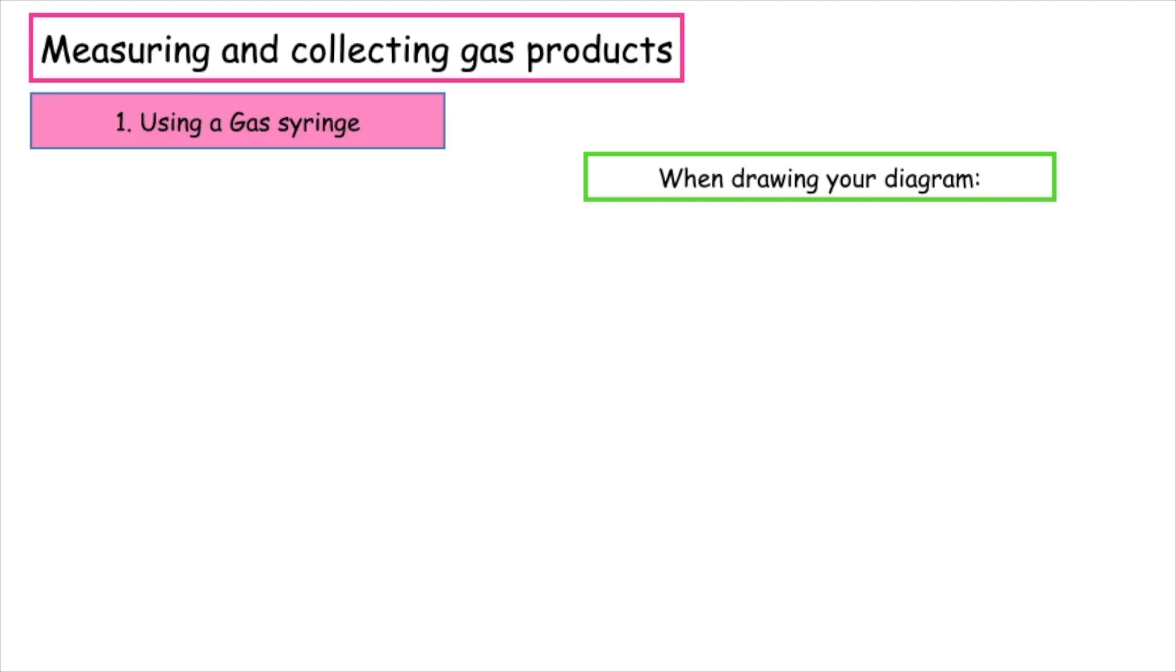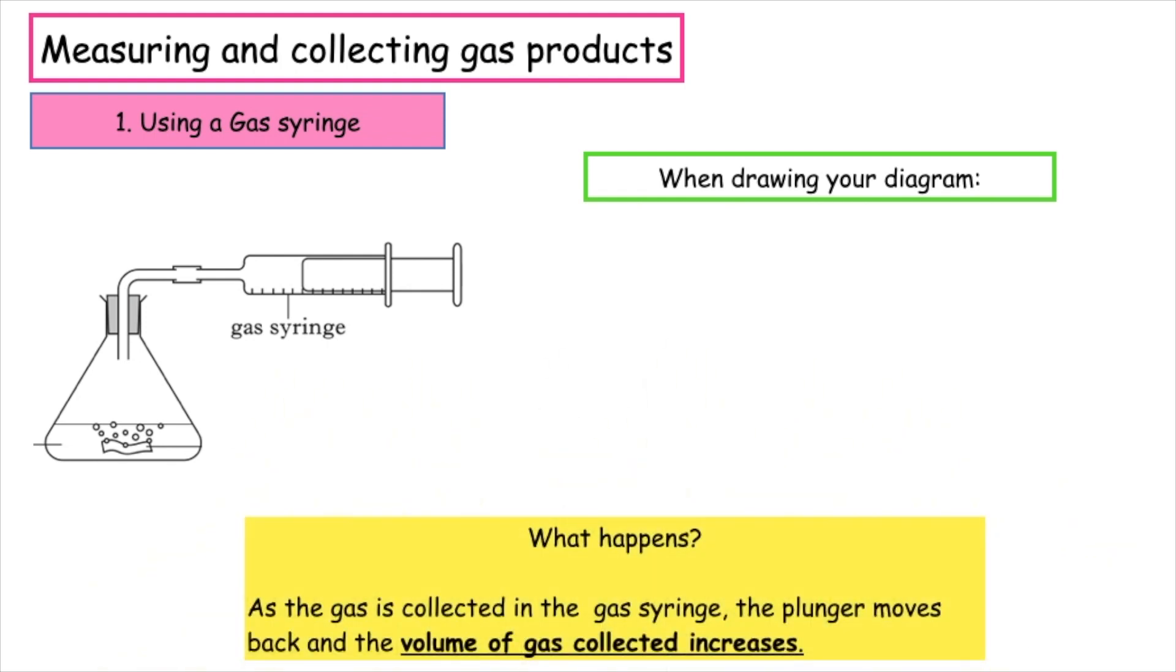When measuring and collecting gas products, there are two different diagrams we have to know. The first one is using a gas syringe. As the gas is collected in the gas syringe, the plunger pulls back and the volume of gas collected increases.